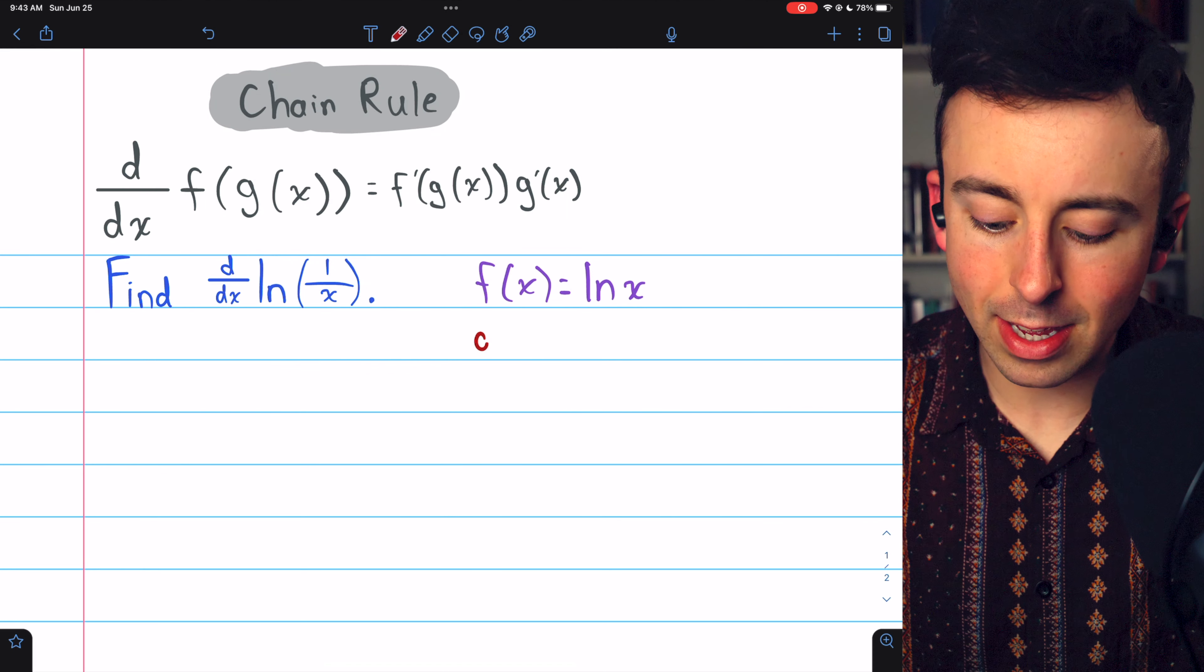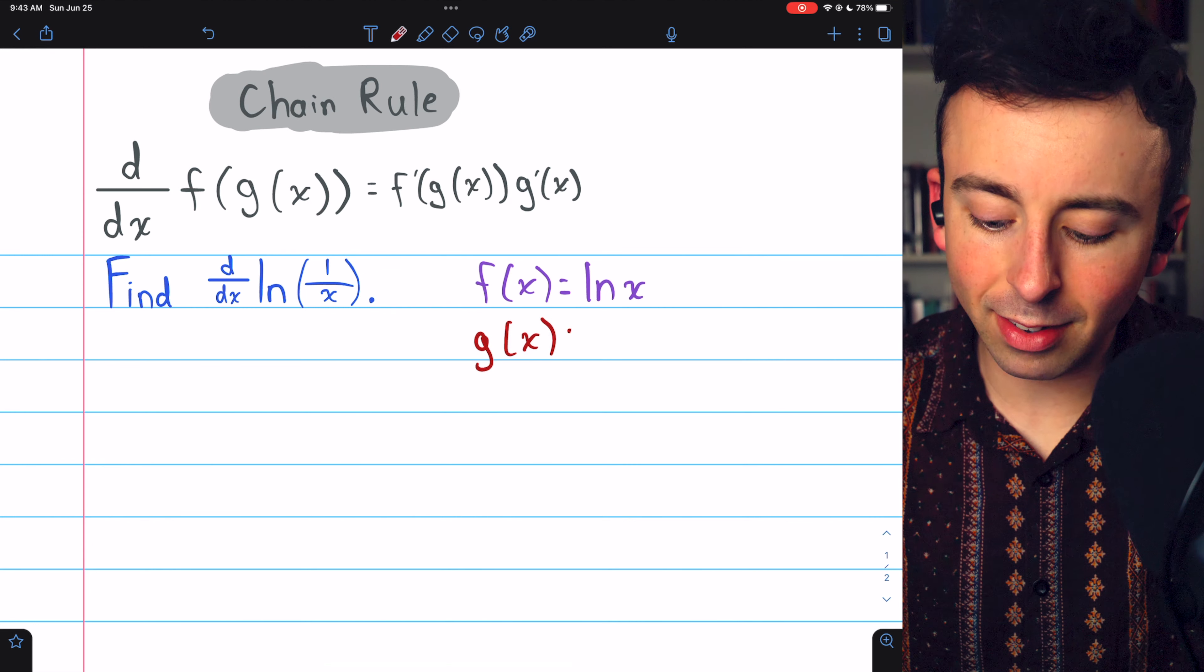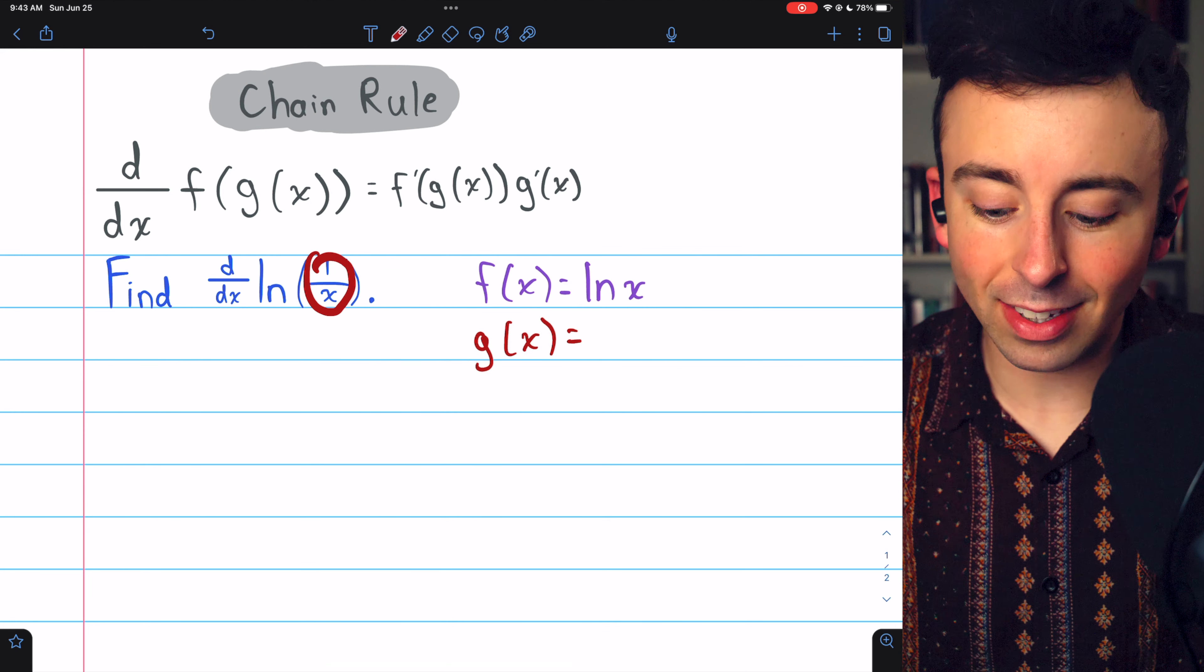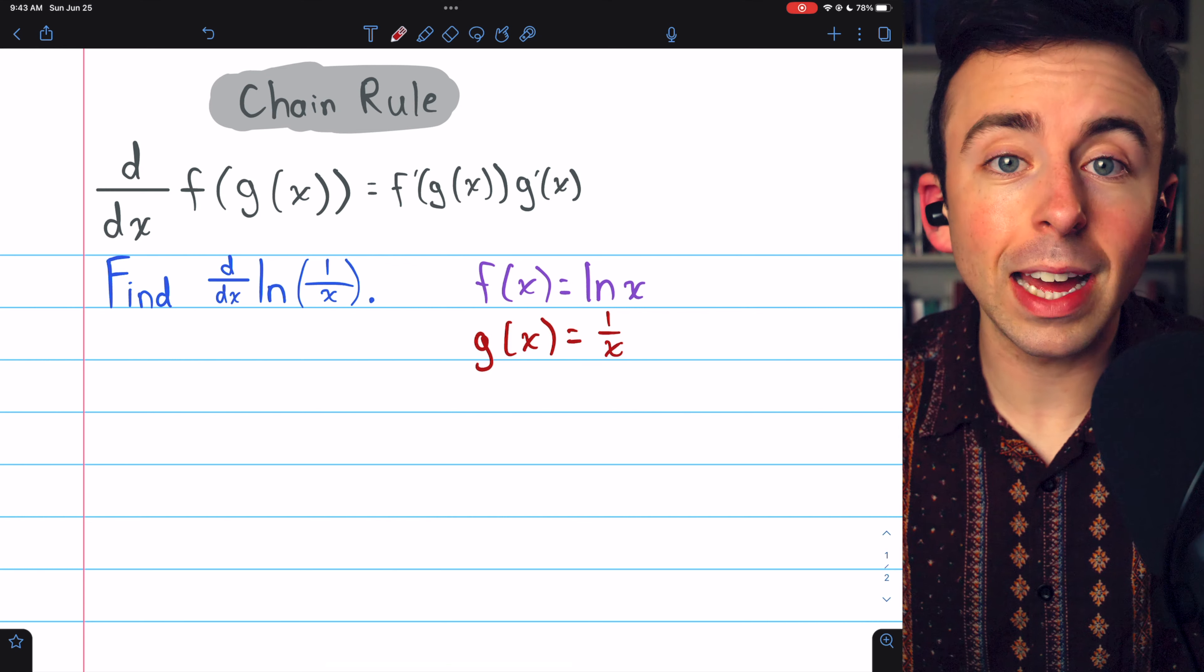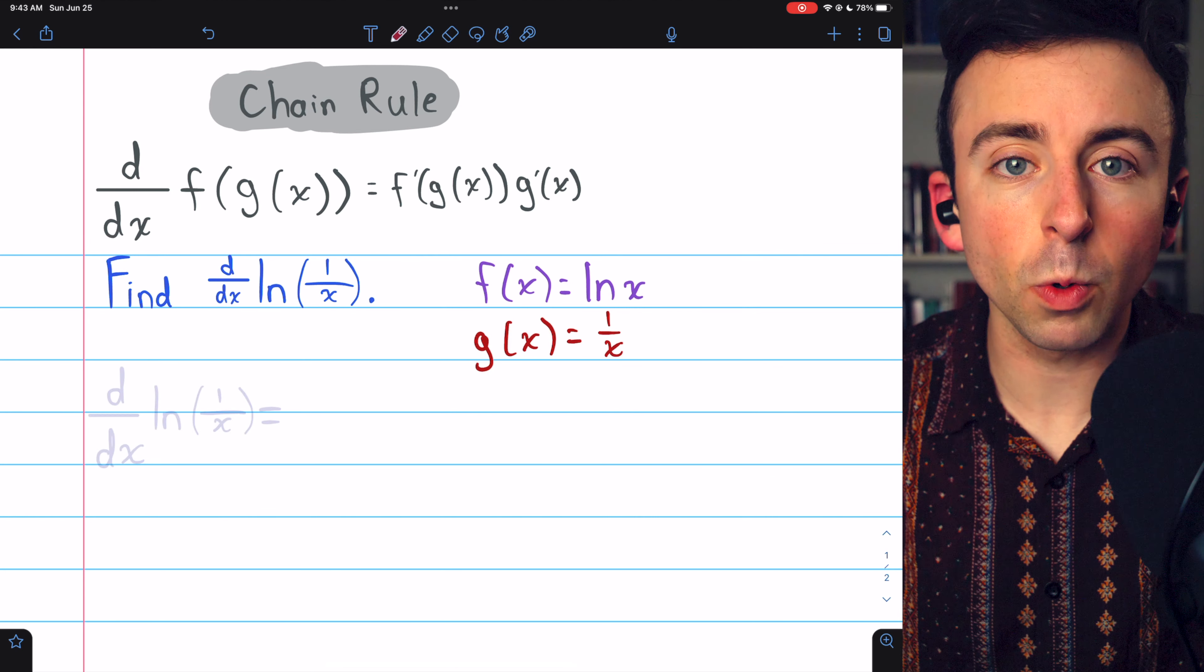g of x, the inside function, is this 1 over x that's inside the log, so having identified our f and g, we can apply the chain rule.